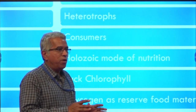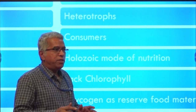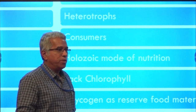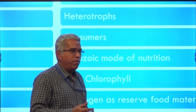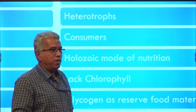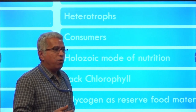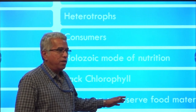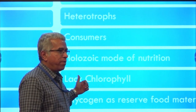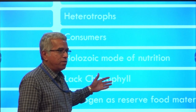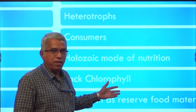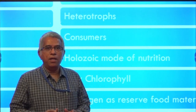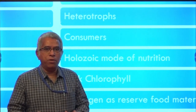The basic difference between Plantae and Animalia: Plantae are producers whereas animals are consumers. Plants have chlorophyll whereas animals do not have chlorophyll. Plants exhibit holophytic mode of nutrition whereas animals exhibit holozoic mode of nutrition. Reserve food material in Plantae is starch whereas in Animalia it is glycogen. Thank you very much.